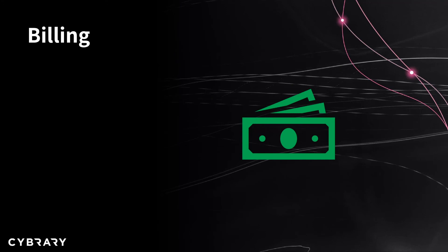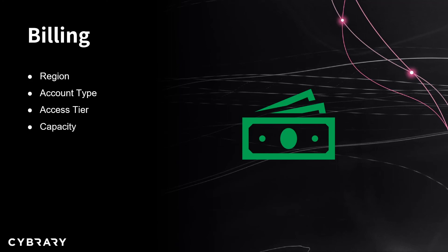Let's talk about what goes into billing and how much our storage accounts are going to cost us. The first factor is region, based on the geographic region where the storage account has been provisioned — different regions are going to have different prices associated with them. Next is your account type, like the general v1, v2, or block blob storage. We also have our access tiers — for example, in the hot tier, it's going to be the most cost effective for accessing it, but the amount of data we store in it and those costs are going to be higher. Next is capacity, which refers to how much of the storage account allotment we're going to be using. The more data we put into it, the more we're going to be paying. We also have replication — we could just use LRS, which is our least cost option because the data is not replicated to other regions and data centers.